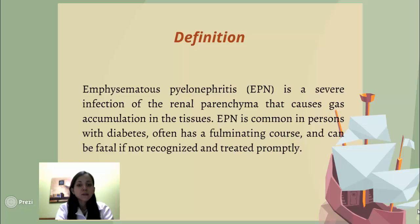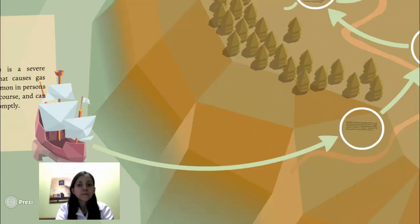EPN is common in persons with diabetes, often has a fulminating course, and can be fatal if not recognized and treated promptly.